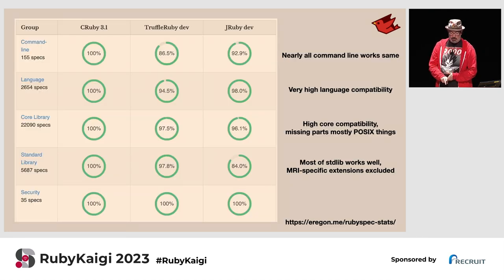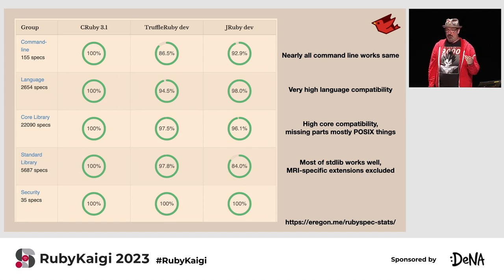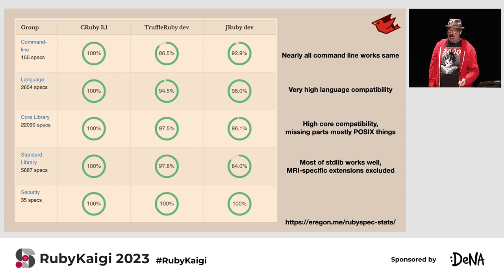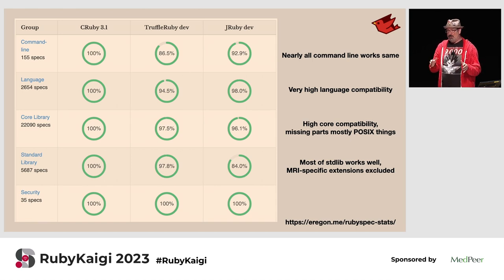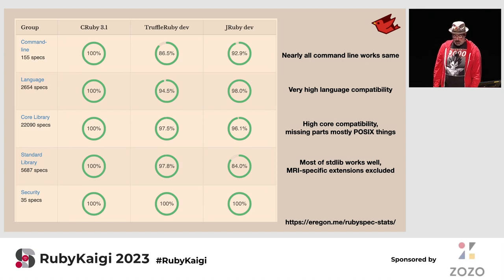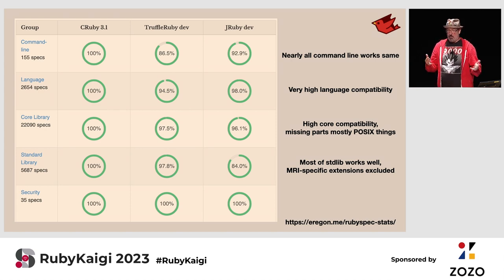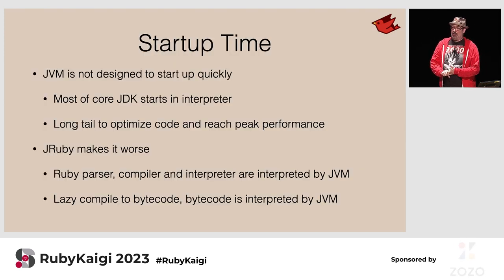Here is a chart created by Benoit of the TruffleRuby project showing compatibility levels based on Ruby specs. JRuby is very high up on command line features and language compatibility — 98% compatible. Some missing language features include flip-flops, which I've left unimplemented to see if anyone files a bug — so far nobody has. Compatibility in core libraries is also very high. The standard library shows a little lower because there are some C extensions we don't support.